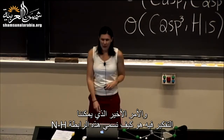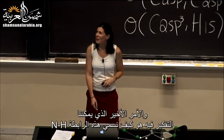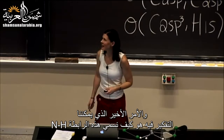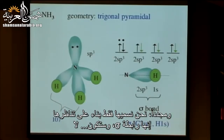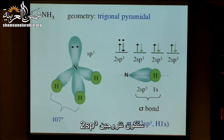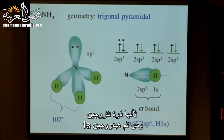The NH bond in ammonia is named based on its symmetry — it's a sigma bond between nitrogen 2sp3 and hydrogen 1s.